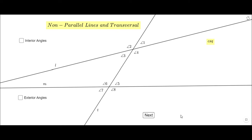Welcome, or welcome back, to C Squared. In this video clip we're going to talk about non-parallel lines and a transversal. On the screen we have three lines: line L, line M, and line T, which is the transversal. I use the letter T because I want it to match the meaning of the word transversal. We have eight angles here.